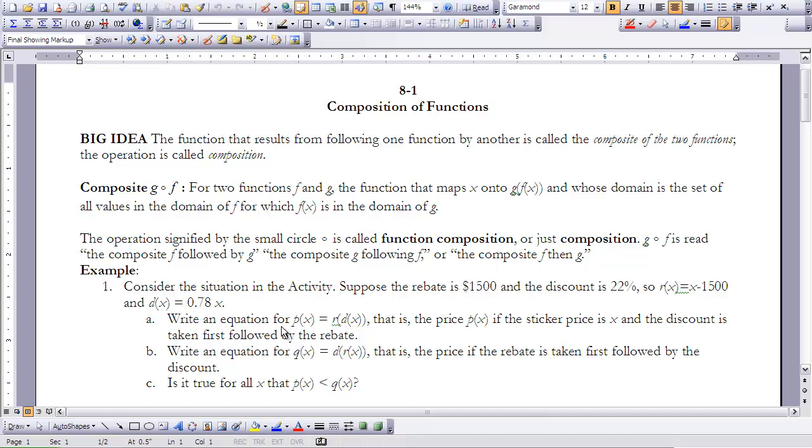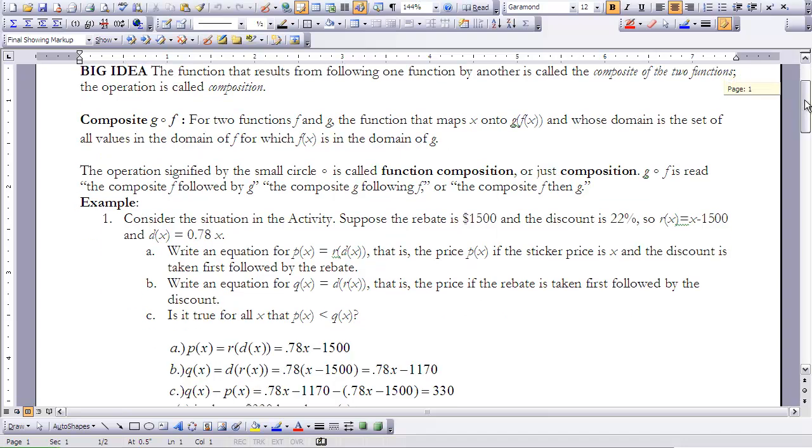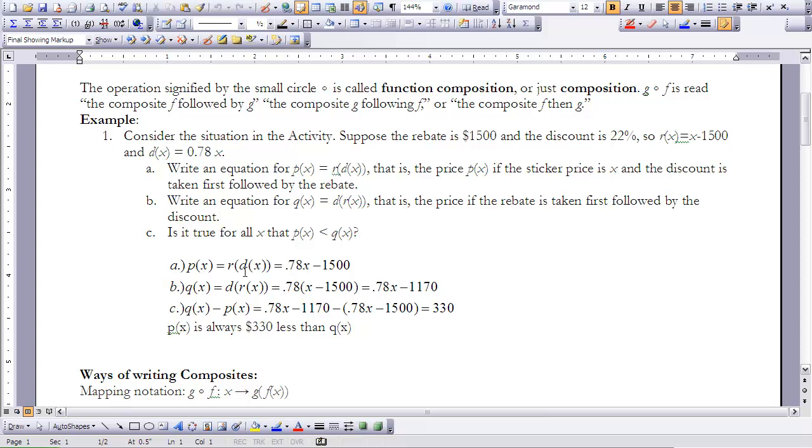First we're going to write an equation for the price of our car, p of x, if we take the rebate after the discount, so r of d of x. That is the price if the sticker price is x and the discount is taken first, followed by the rebate. If I take my discount first, that would be 78% of x, and then we subtract $1,500 off. Part B says write an equation for Q of x, where we take the discount after the rebate. So if I take 78% of the price after the rebate, that would be 0.78x minus 1170.